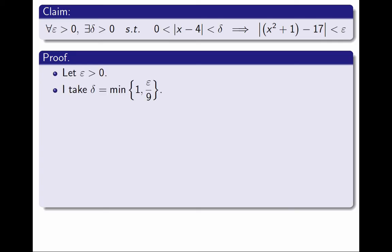To prove this claim, first I fix an arbitrary positive ε, then I take δ to be the minimum of 1 and ε over 9. How do I know this? Because of all the rough work I did in the previous slide, otherwise I wouldn't know it. Choosing this δ guarantees that δ is less than or equal to 1, and also less than or equal to ε over 9.